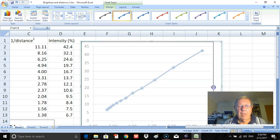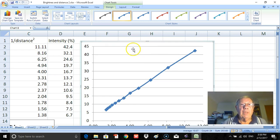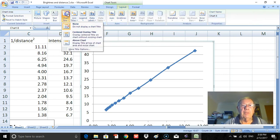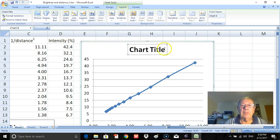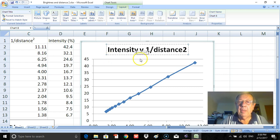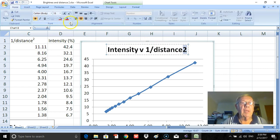And again, I need to put in a title, a graph title, axes, label the axes with the units as well. So I click here, and again go over here to chart title and go down here to above the chart. And it's intensity v 1 over distance squared.